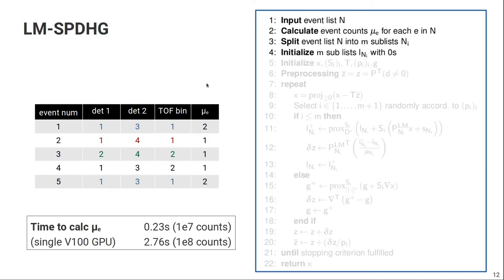So you might see, of course, calculating that event multiplicity is overhead, and that might destroy actually the speedup. But this is not true. So I've done some testing. If you have emission lists of 100 million events, calculating mu on a V100 GPU takes around 2.7 seconds. And of course, for shorter list-mode files, it's much faster. So the overhead compared to all the iterations and the time that the projections take is usually very small.